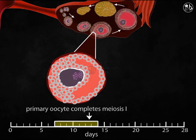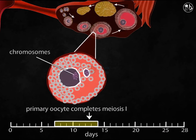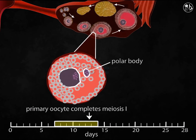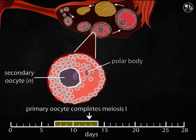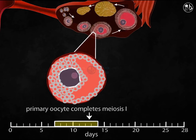Meiosis one is completed in the maturing oocyte and it divides into two haploid cells, with half of the chromosomes given to each cell. One cell is known as a polar body, which receives very little cytoplasm.